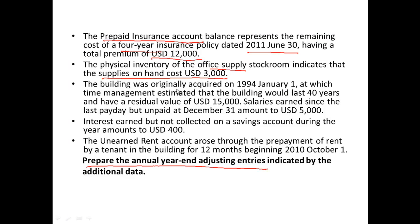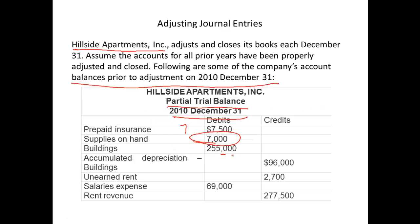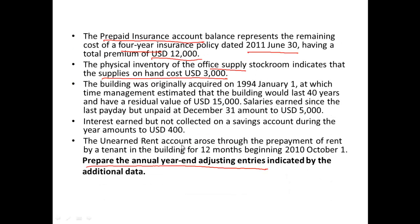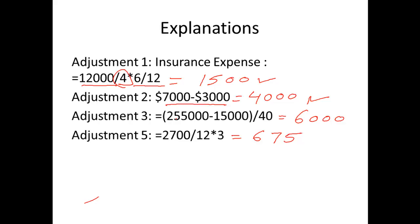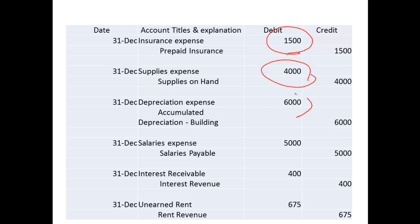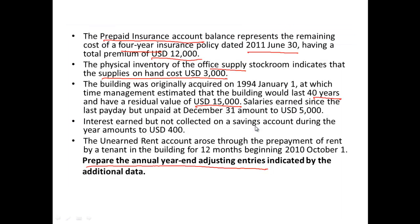The value of the building in the trial balance is $255,000. The salvage value is $15,000 and the useful life is 40 years. Depreciation equals cost minus salvage value divided by useful life, which comes to $6,000. We debit depreciation expense with $6,000 and credit accumulated depreciation on building.